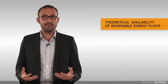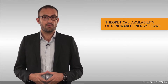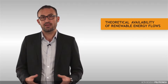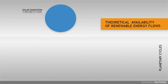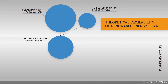The assessment of the theoretical availability of different renewable energy flows is a difficult task. The starting point is to consider how solar radiation drives the major processes of the hydrosphere, atmosphere and biosphere. After accounting for the Earth's albedo, only approximately 70% of the incoming solar radiation reaches the Earth's surface, equivalent to around 3,800,000 exajoules per year of solar energy flow.